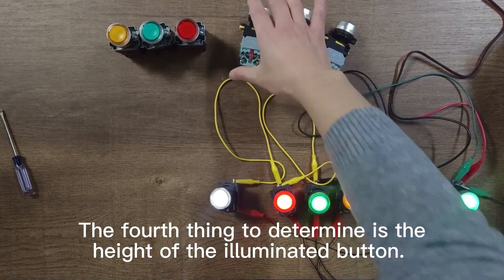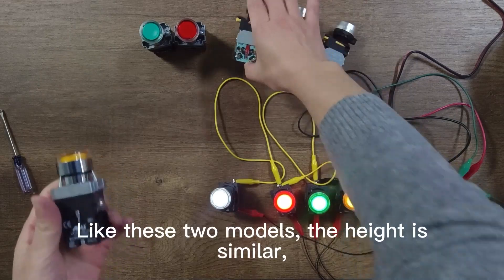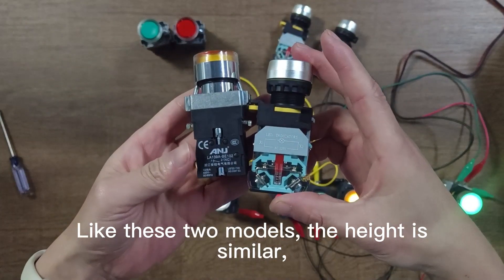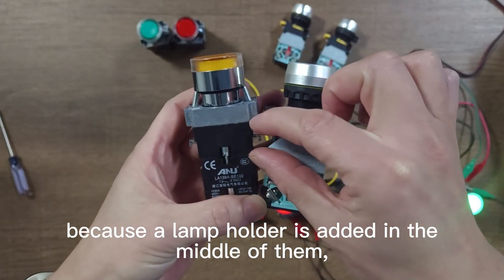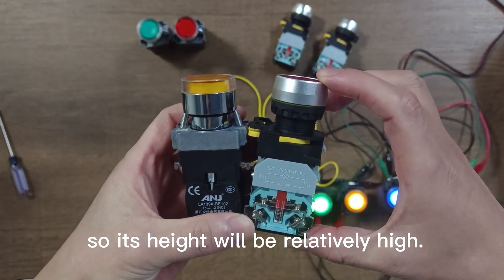The fourth thing to determine is the height of the illuminated button. Like these two models, the height is similar, because the lamp holder is added in the middle of them. So its height will be relatively high.